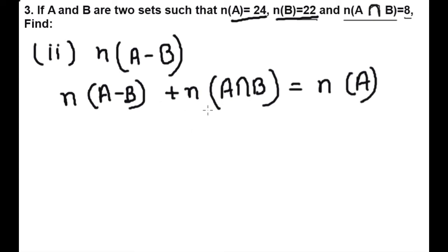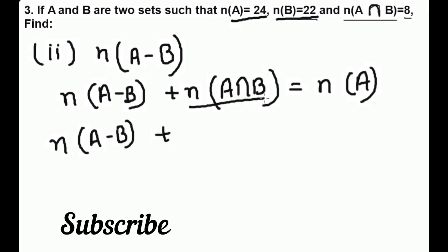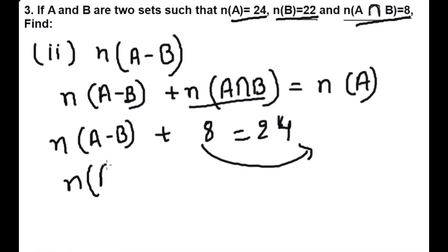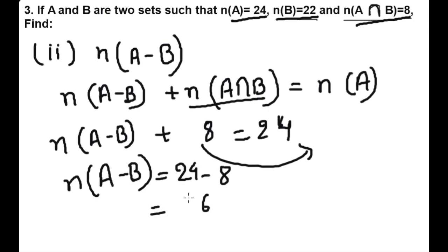We have to find A minus B. We have the value of A intersection B as 8, and the number of elements of A is 24. We will transfer the intersection term to the right side, so A minus B equals 24 minus 8, which is 16. The number of elements of A minus B is 16.